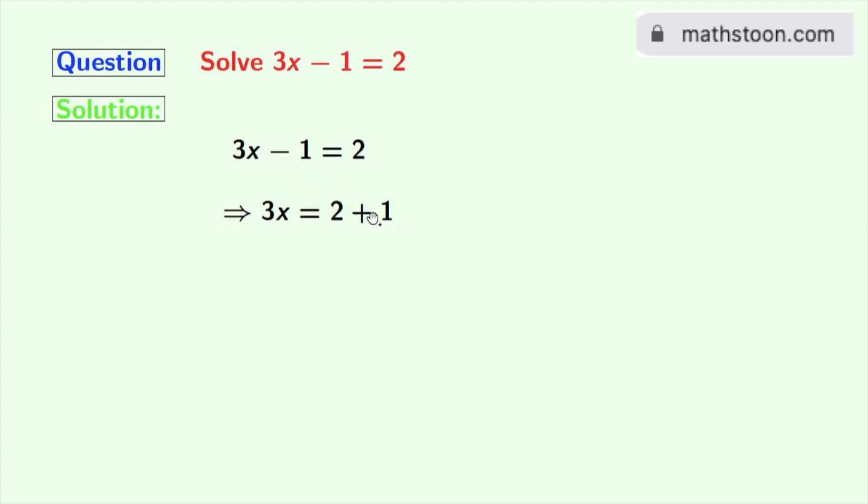Here the negative sign will become positive on the right hand side. As 2 plus 1 is 3, we get 3x equals 3.